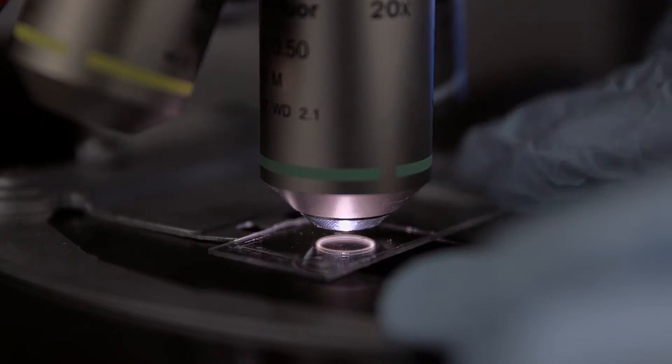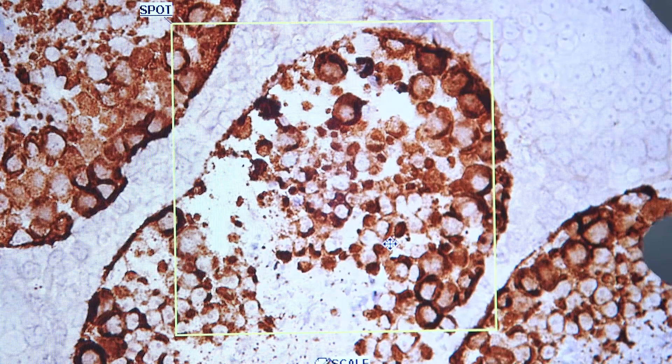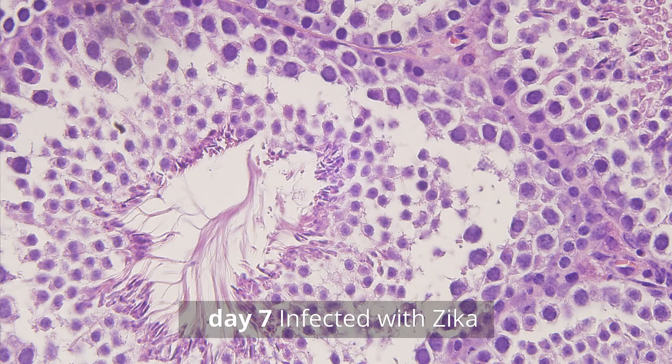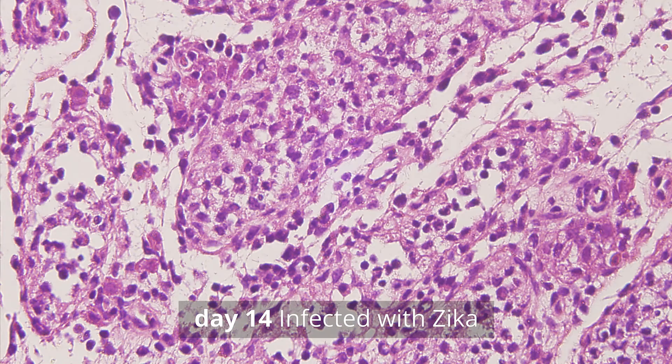We did a longitudinal study where we infected male mice with Zika virus and what we found was by day seven you could already detect the virus there and it was cleared by around day 21, but you could see a progressive destruction of the cells in the testes.